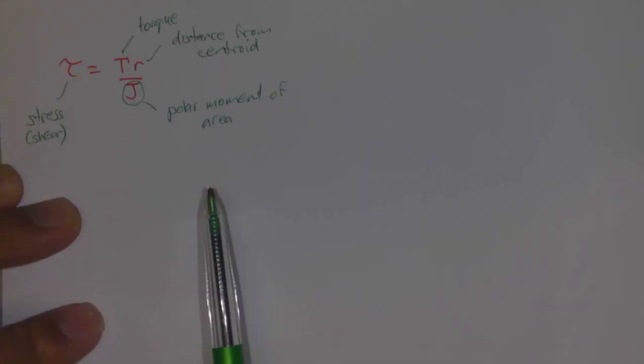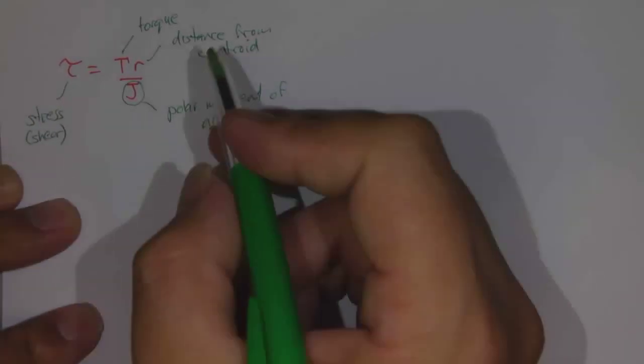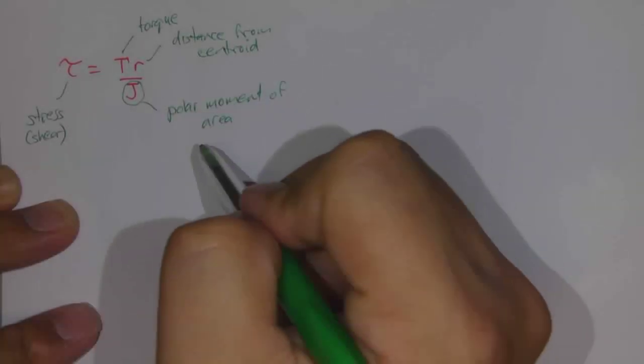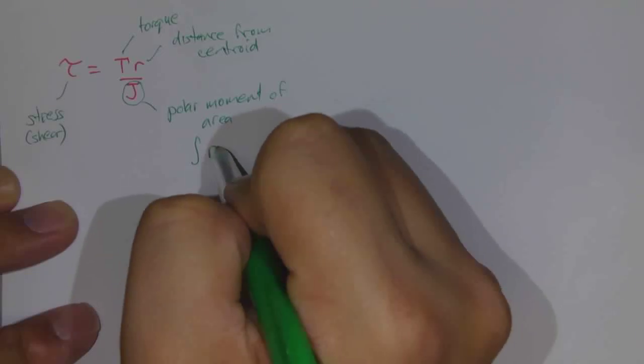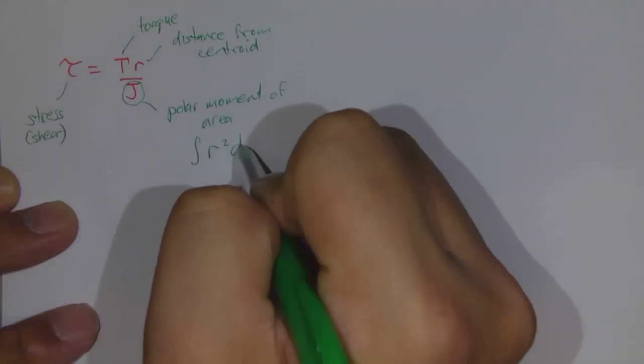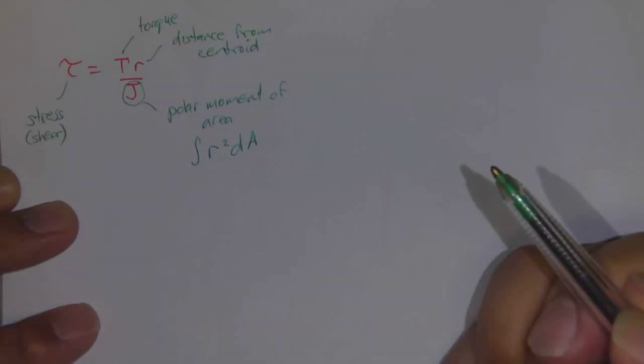Now your polar moment of area, that's been calculated from an equation that looks something like this. It's the integral of the distance away from the center of some kind of object squared, with respect to each little piece of area.